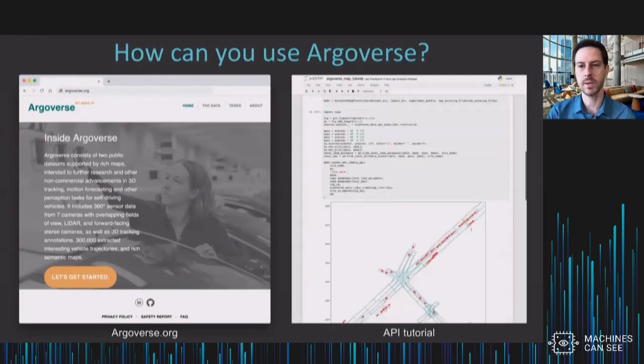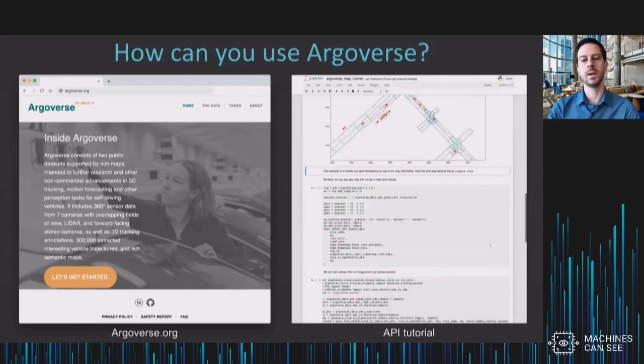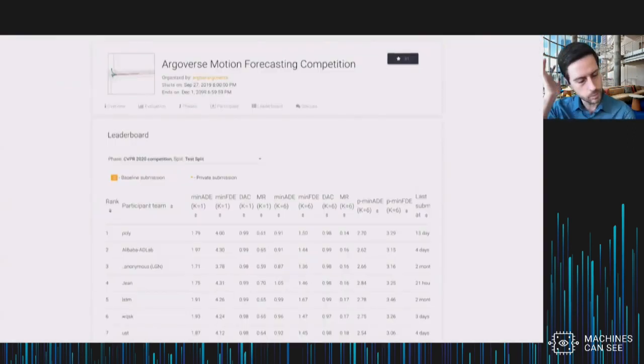Since we released our dataset, there have been other great self-driving vehicle datasets released, a couple that have HD maps as well. But if you want to use Argoverse, you can go to argoverse.org and download it. We have a pretty nice API, I think, that you can get on GitHub and we're pretty responsive to questions. We're running a competition right now that will end on June 10th, just in time for CVPR this summer. Right now I'm highlighting the leaderboard for the motion forecasting competition where the task is to predict the future for agents in a scene. We've got a lot of entries and it's really fun to see what people are coming up with.